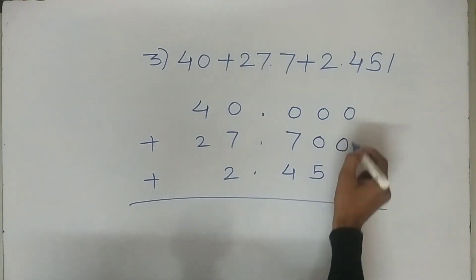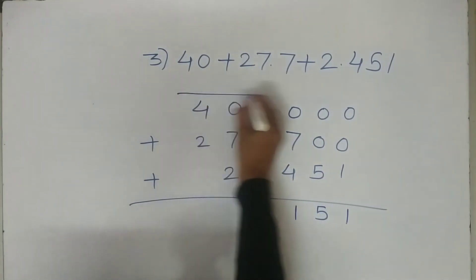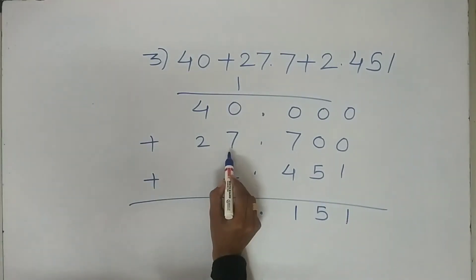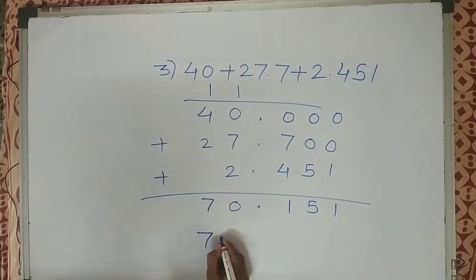One plus zero is one, five plus zero is five, seven plus four is eleven, one carry forward. Put the decimal point. Seven plus one is eight, eight plus two is ten, one carry forward. Four plus one is five, five plus two is seven. Our answer is 70.151.